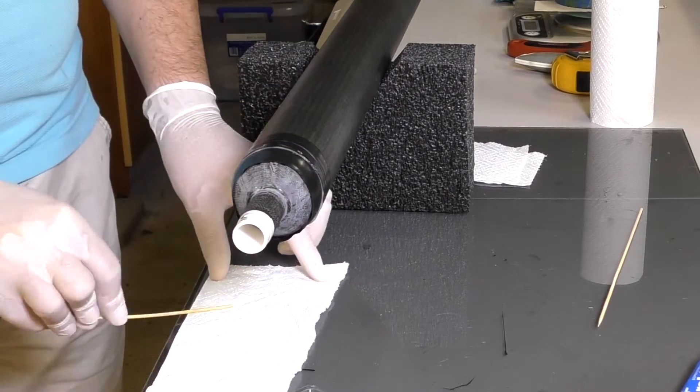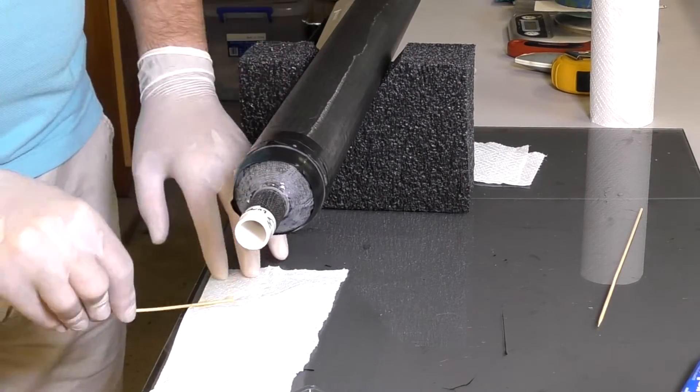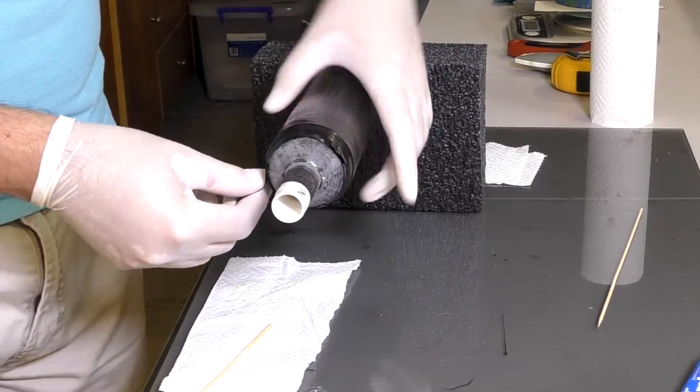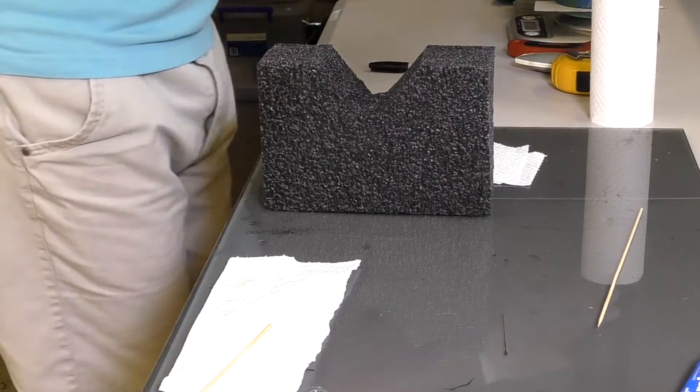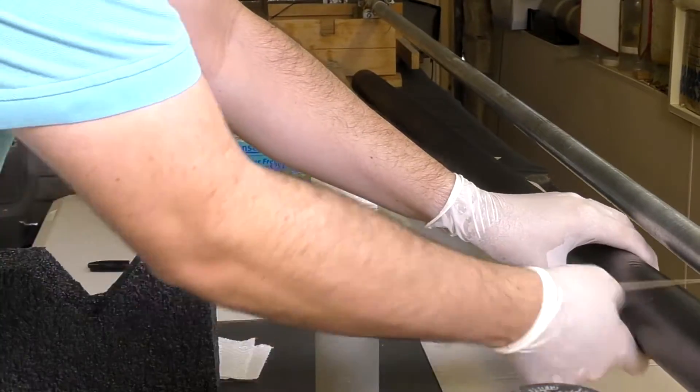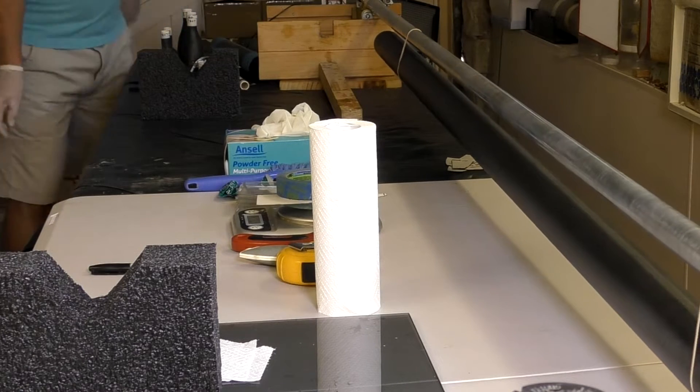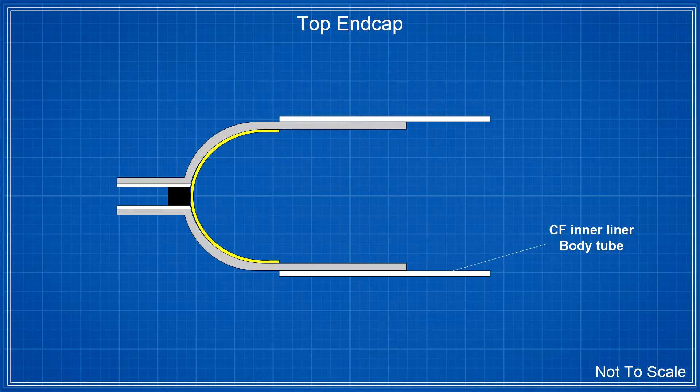Once it's pushed all the way in, we remove all excess glue. Then we wrap the joint with electrical tape, and we place it on the rotisserie again. This makes sure that the internal joint edge has an even spread of glue. The cross section now looks like this with the end cap in the tube.